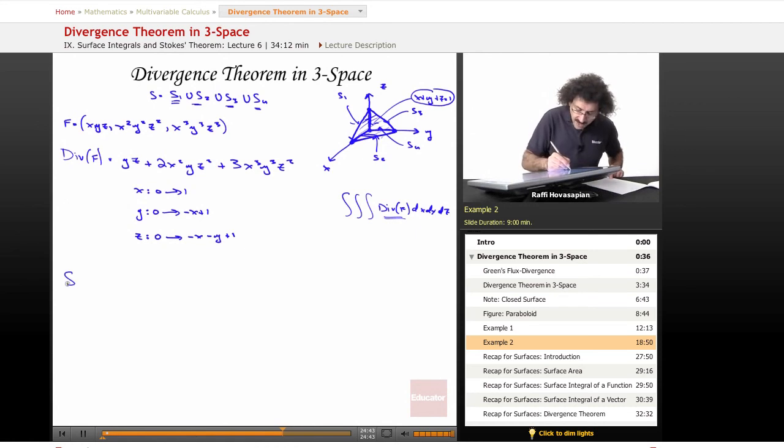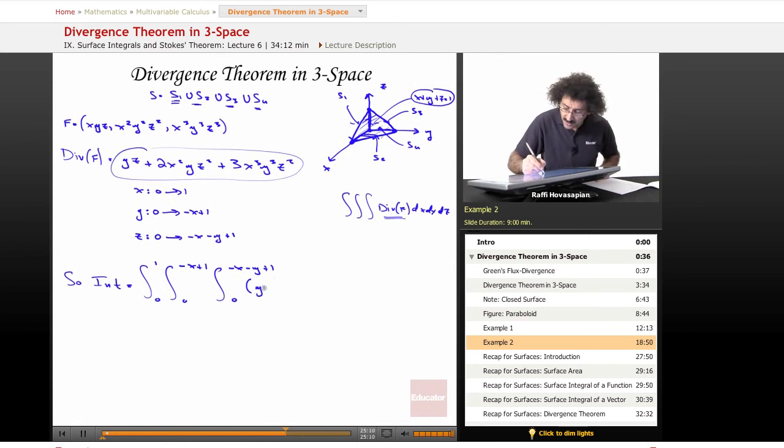Our flux integral is equal to the integral from 0 to 1, 0 to 1 minus x, we'll do y next, 0 to 1 minus x minus y, and we have our divergence which is yz plus 2 x squared y z squared plus 3 x cubed y cubed z squared, dz dy and dx. Because this is z, this is y, and this is x working our way out.